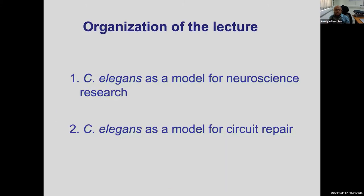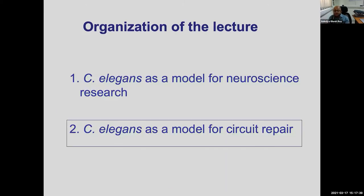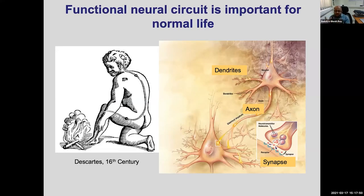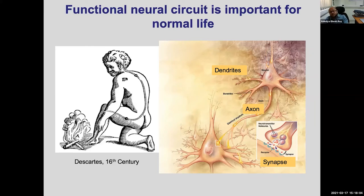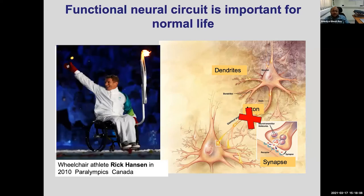I would now like to move to the second part of my talk—our group's work. The circuitry is very important for behavior; information flows and is exchanged at the synapse. Imagine something goes wrong—you have an accident and break your spinal cord. As in the case of Rick Hansen, whose spinal cord neurons were broken, the rest of his life he had to use a wheelchair. This is one extreme example because central nervous system neurons do not regenerate.